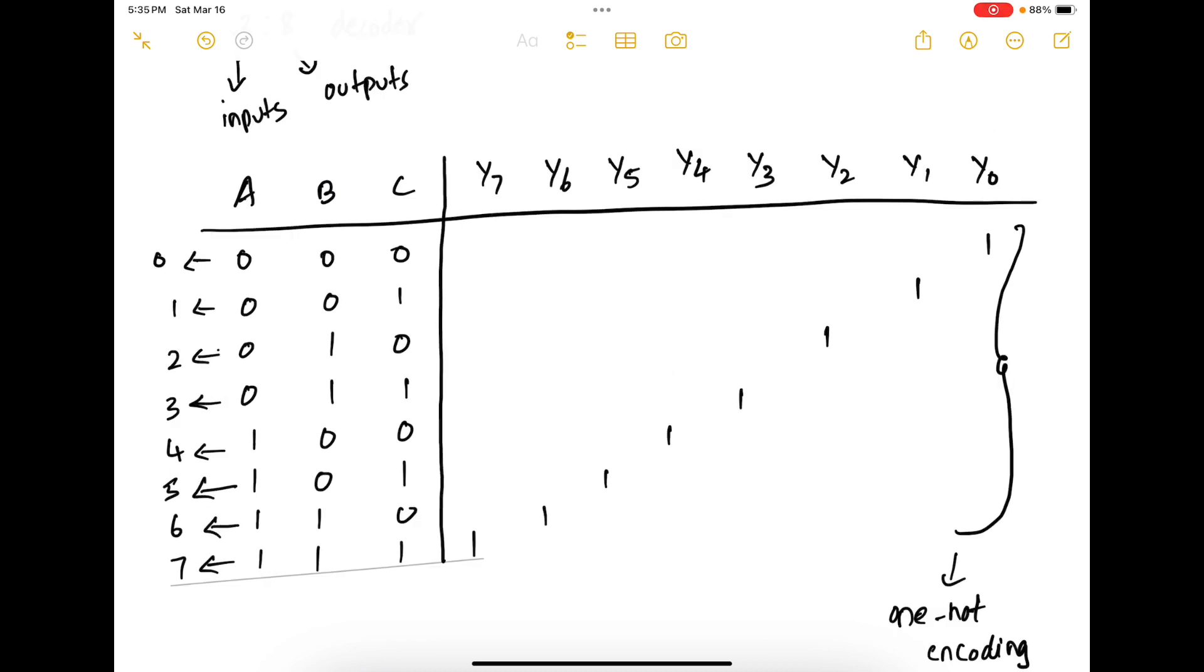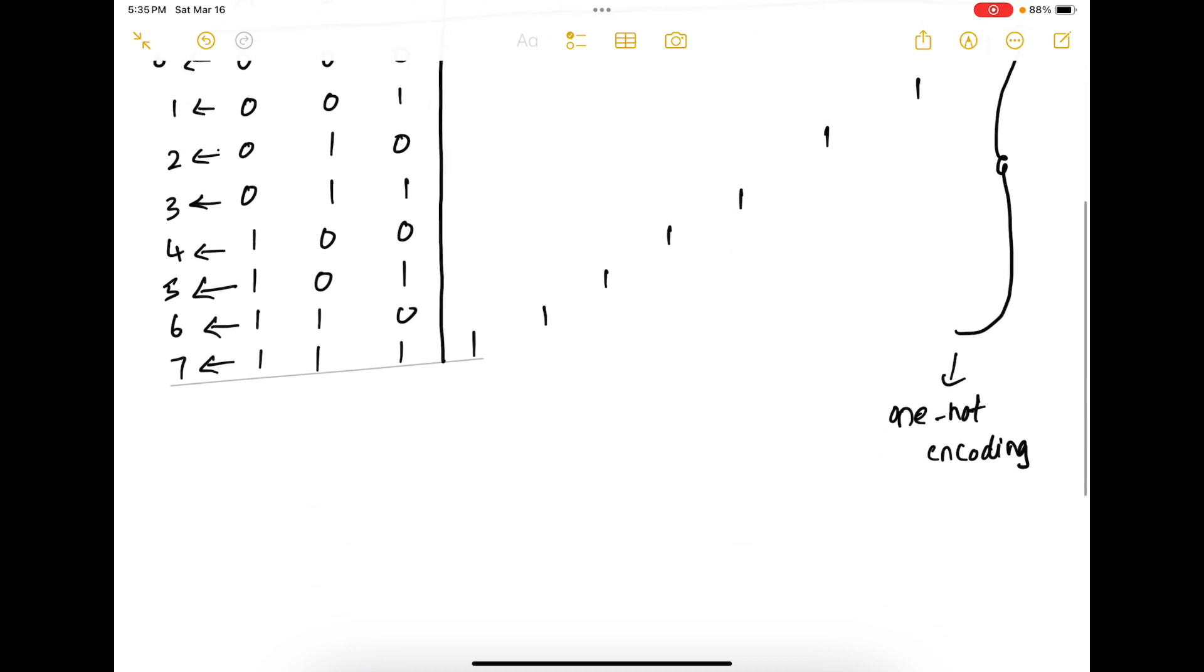Again, the equation for Y0 is A prime, B prime, C prime. Y1 is A prime, B prime, C, and so on. Y7 is ABC.